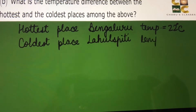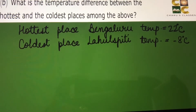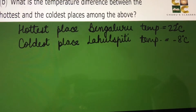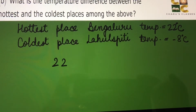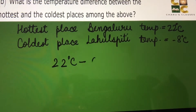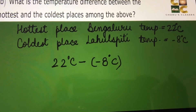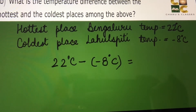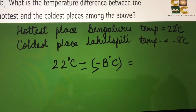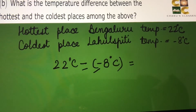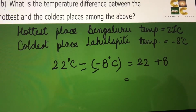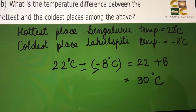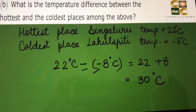The temperature of Lahulspiti was minus 8 degrees Celsius. The question asks for the temperature difference between the hottest and coldest place, so we calculate 22 degrees minus (minus 8 degrees Celsius). Whenever there is a minus outside and a minus inside the bracket, minus minus becomes plus. So we have 22 plus 8, giving a difference of 30 degrees Celsius.